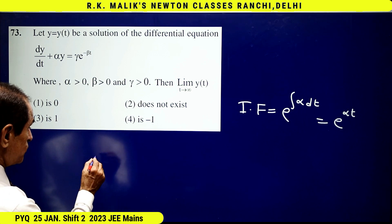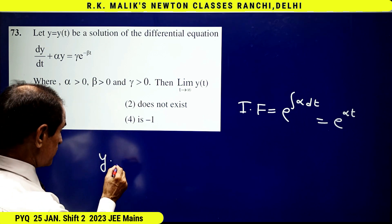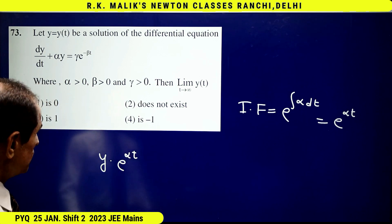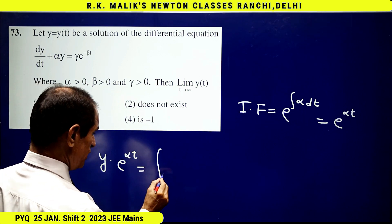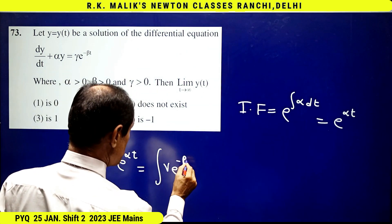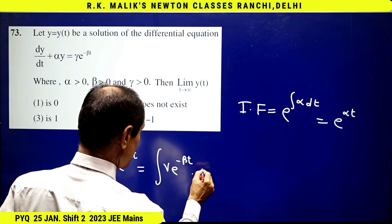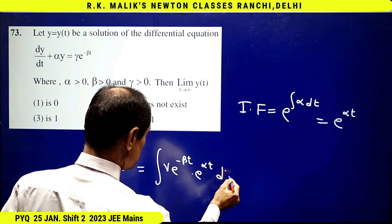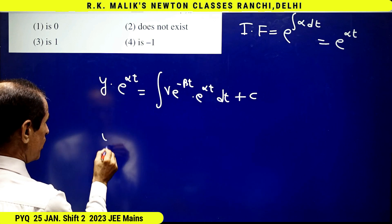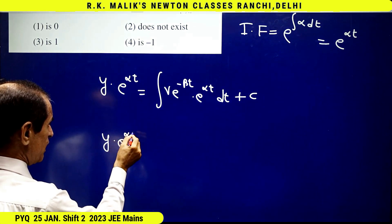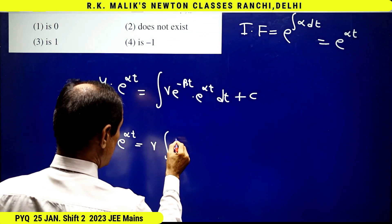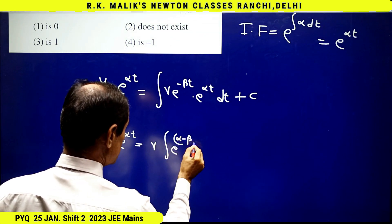Hence the solution is y into the integrating factor, that is e to the power alpha t, is equal to the integral of gamma e to the power minus beta t into e to the power alpha t dt plus c. That is, y into e to the power alpha t equals gamma e to the power (alpha minus beta) t dt plus c.